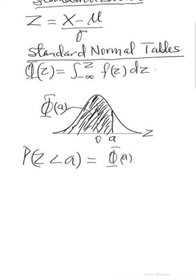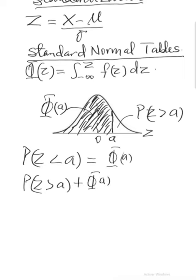To get the probability of the area to the right — for instance P(Z > a) — we note that the total area enclosed by the curve must be 1. So P(Z > a), the unshaded area, plus the shaded area Φ(a), must equal 1. Therefore, P(Z > a) = 1 − Φ(a), which gives you the required result.